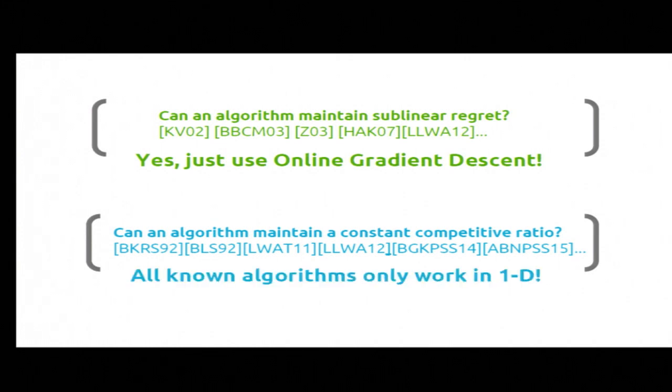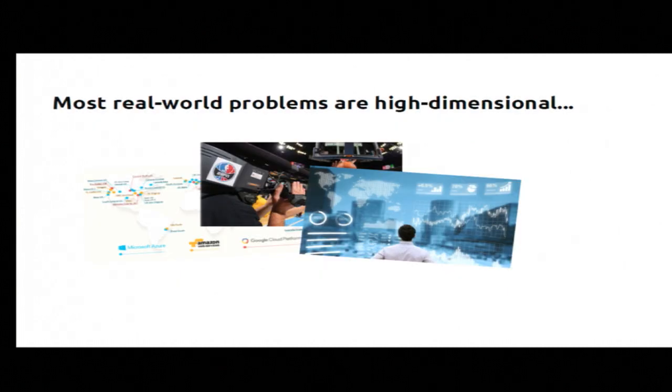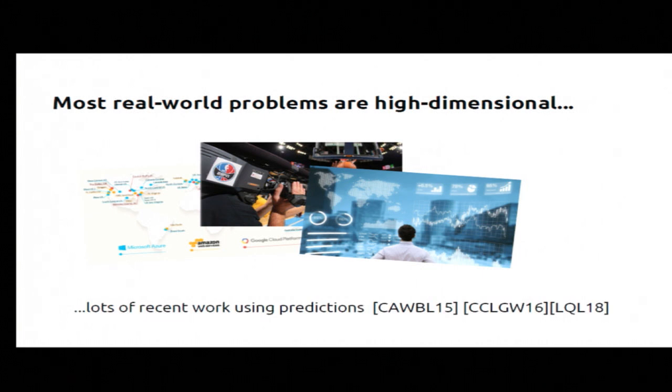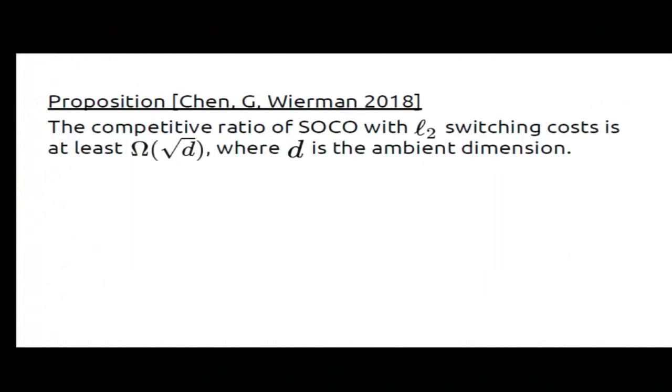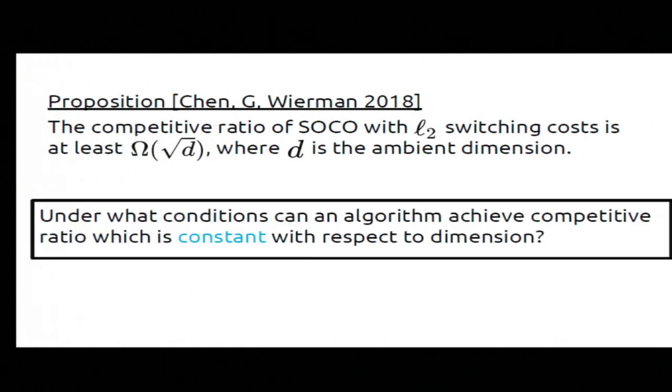On the competitive ratio side, it's a little bit frustrating. Everything we know after like 20 years of work is in one dimension. We don't know anything at all beyond that. This is kind of frustrating because the problems I told you about were all high-dimensional problems. Like, for example, this geographical load balancing, environmentally friendly problem, there's a lot of servers, a lot of variables to handle there. It's not a one-dimensional problem. And because of this, there's been a lot of work in recent years on using predictions. Can I do better if I have extra information? I can explain why there hasn't been a nice, clean competitive ratio result because there is no nice, clean competitive ratio result. Any algorithm for this problem must have competitive ratio that's growing at least in the square root of dimension. You cannot have a nice constant competitive algorithm. And so that raises the question, under what conditions or what restrictions on the cost functions can we get that constant? That's what this talk's about.